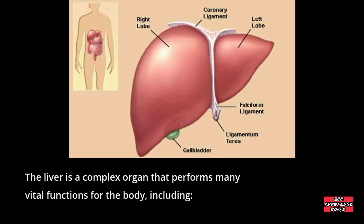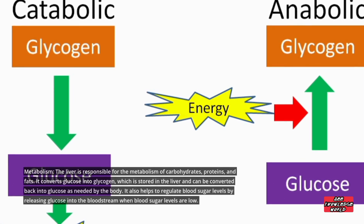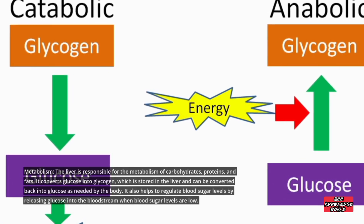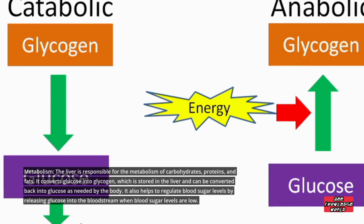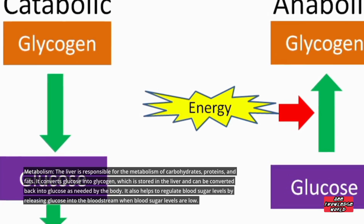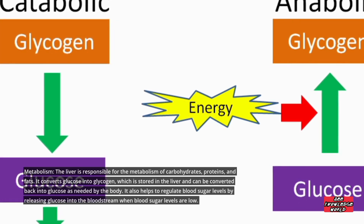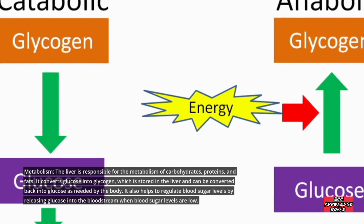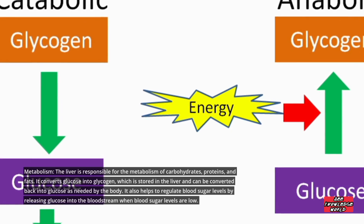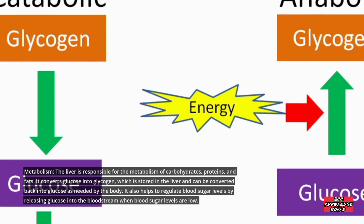The liver is a complex organ that performs many vital functions. Regarding metabolism, the liver is responsible for the metabolism of carbohydrates, proteins, and fats. It converts glucose into glycogen, which is stored in the liver and can be converted back into glucose as needed by the body.